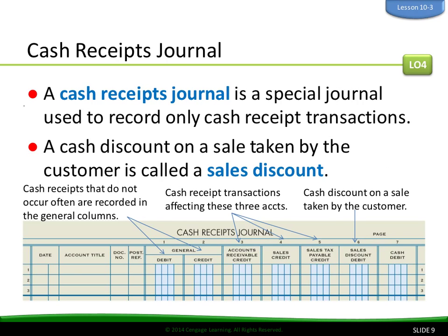Getting into the nitty-gritty. We have our cash receipts journal. A cash receipts journal is a special journal used to record only cash receipt transactions. Remember, cash can be debit, credit, or actual cash. A cash discount on a sale taken by the customer is called a sales discount. Cash receipts that do not occur often are recorded in the general columns. Cash receipt transactions affect three accounts: accounts receivable credit, sales credit, and sales tax payable credit.